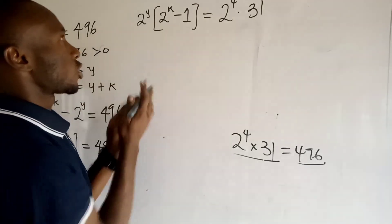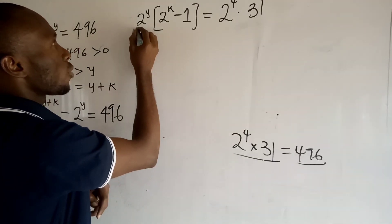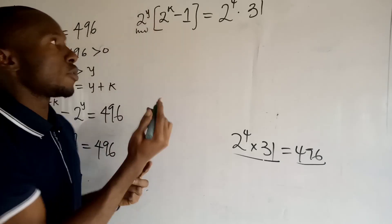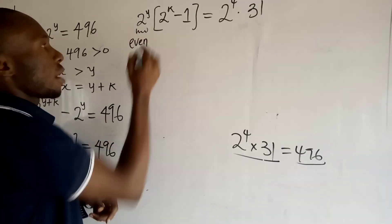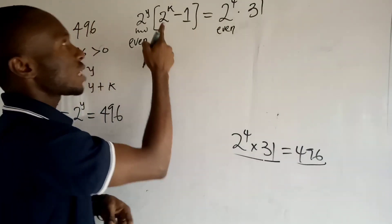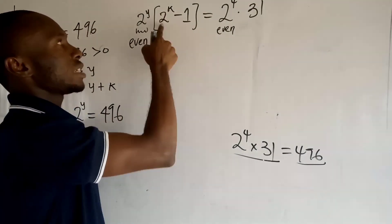Now let us examine this equation. You can see that this guy, whatever be this guy, must always be even because 2 to this power must always give you an even number. And of course you can see that this guy is even.